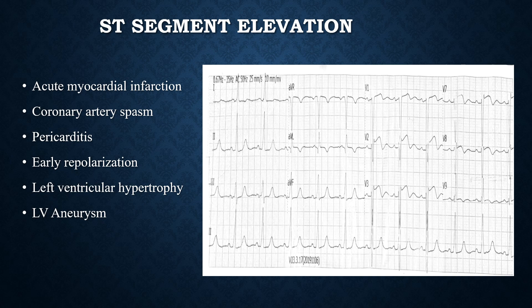The history is also not supportive of pericarditis, so it is ruled out. Early repolarization is a benign pathology and, based on the history, the presence of Q waves, and the T wave inversions, this again appears very unlikely. Left ventricular hypertrophy is also unlikely because the patient is not hypertensive, and the Q waves and T wave inversions are not suggestive of LVH. Two differentials remain: acute myocardial infarction and LV aneurysm.